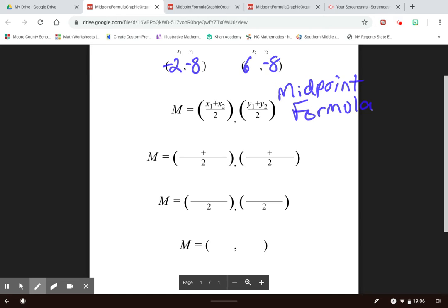So I have x1 plus x2, so my x1 value is negative 2 and my x2 value is 6. Then I have y1 plus y2, so my y1 is negative 8 and my y2 is also a negative 8. So what I do then is negative 2 plus 6 becomes 4, and then negative 8 plus a negative 8 becomes a negative 16.